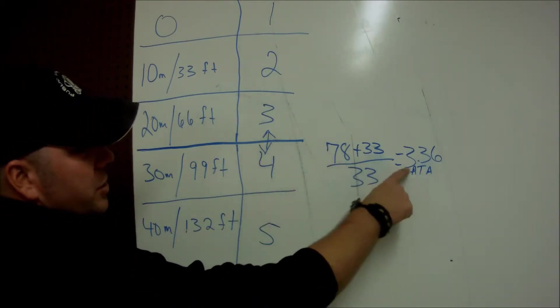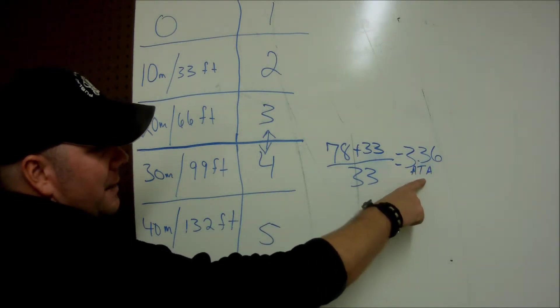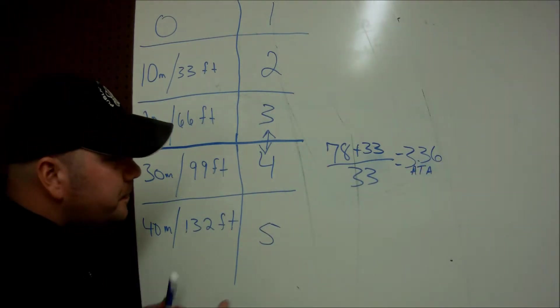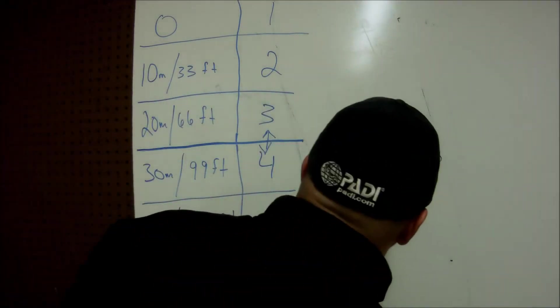Well, using this calculation, I can show that 3.36 absolute atmospheres is what 78 feet is. So it's a very simple calculation.